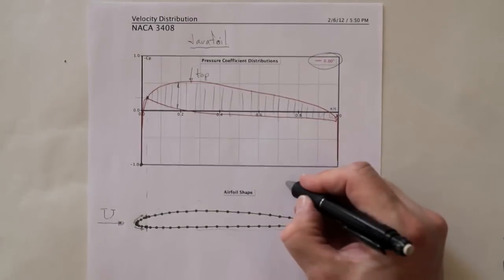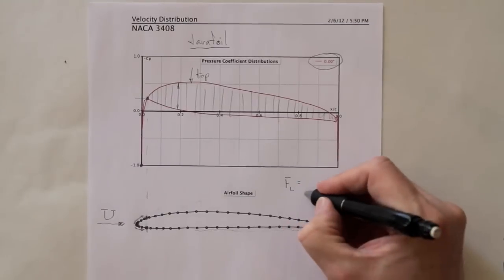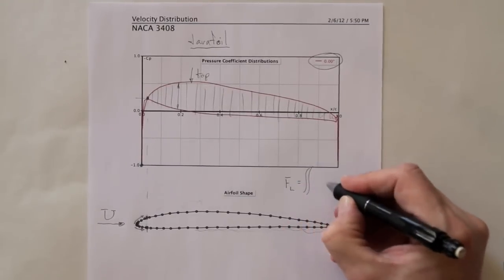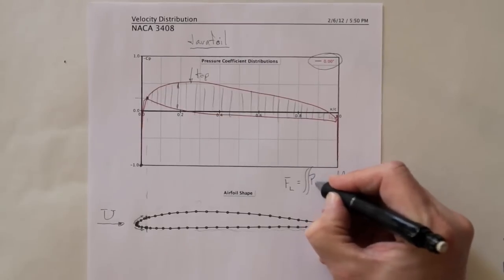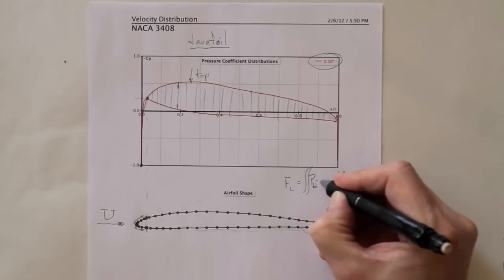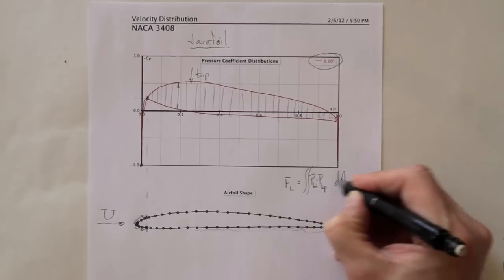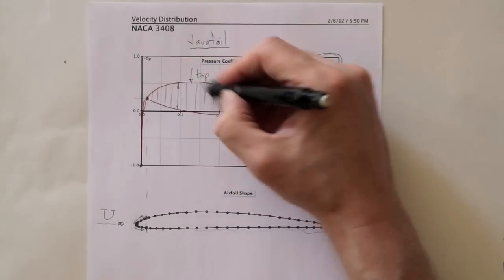So we'd be able to get the force of lift equal to double integral over the area: P bottom minus P top dA. That's this area here.